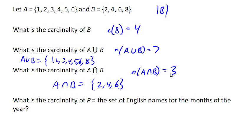So the last question here is unrelated to those sets. It says, what is the cardinality of set P, which is the set of English names for the months of the year? So as you probably know, there are 12 months in the year. So the number of month names, or actually I guess I should say, the number of elements in set P is 12. There are 12 names for the months of the year.